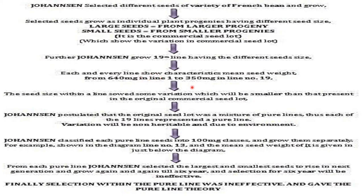Seeds sown in line one had a seed weight of 650 mg, and the largest seeds were grown in line number one, with gradually smaller seeds in the proceeding lines. The smallest seed weight was 350 mg, grown in line number 19. The seed size variation within a line was smaller than that present in the original commercial seed lot.